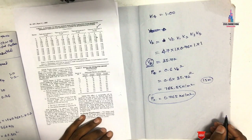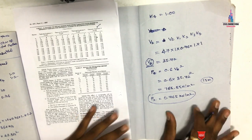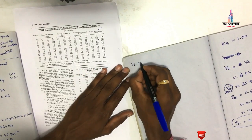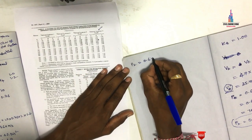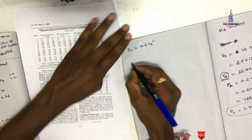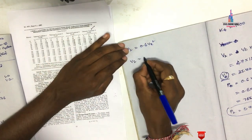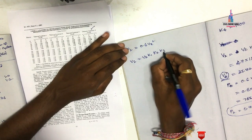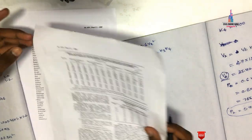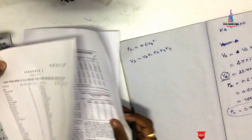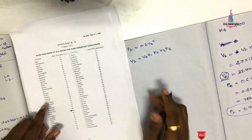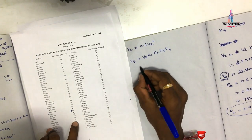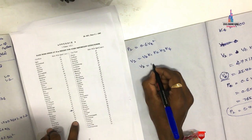Now I will calculate one more load case for a different city — Hyderabad. The formula remains: Pz = 0.6 × Vz², and Vz = Vb × K1 × K2 × K3 × K4. As per IS 875 1987 appendix, Hyderabad has a basic wind speed of 44 meters per second, so Vb = 44 m/s.